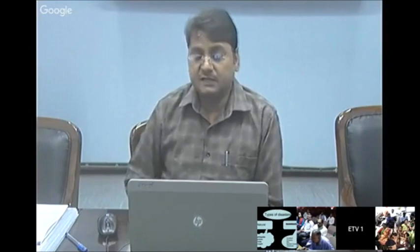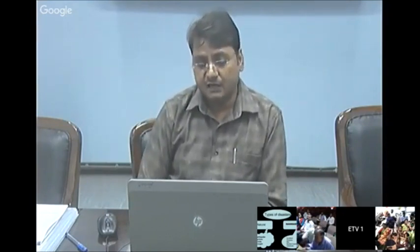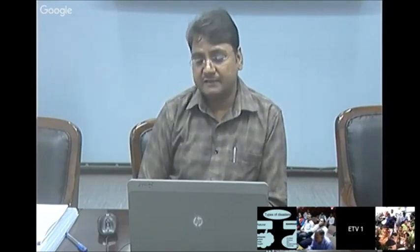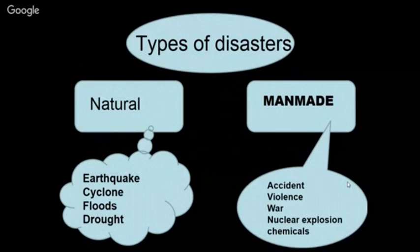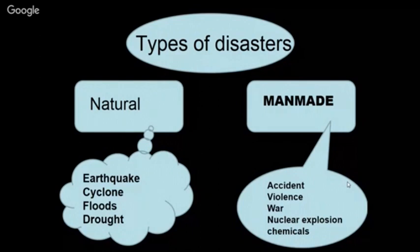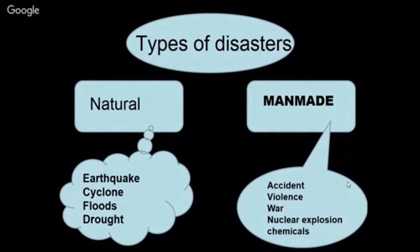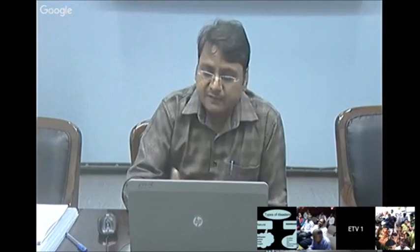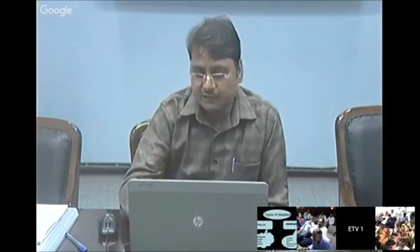Man-made disasters now include not making houses earthquake-resistant, not providing cyclone preparedness knowledge, and not preparing for floods. Natural calamity and man-made disaster are now clubbed together — nature presents the event, but our lack of preparation creates the problem for the community.